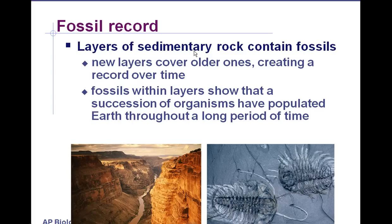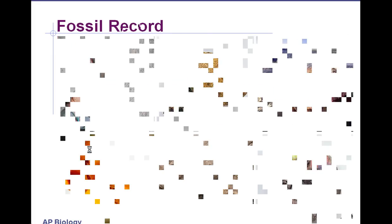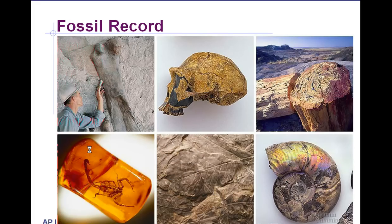The fossils within the layers show that a succession of organisms have populated the Earth throughout a long period of time. We have a general trend of going from simple organisms in the oldest rock layers to more complex over time. Fossils are an impression or the dead remains of plants and animals.